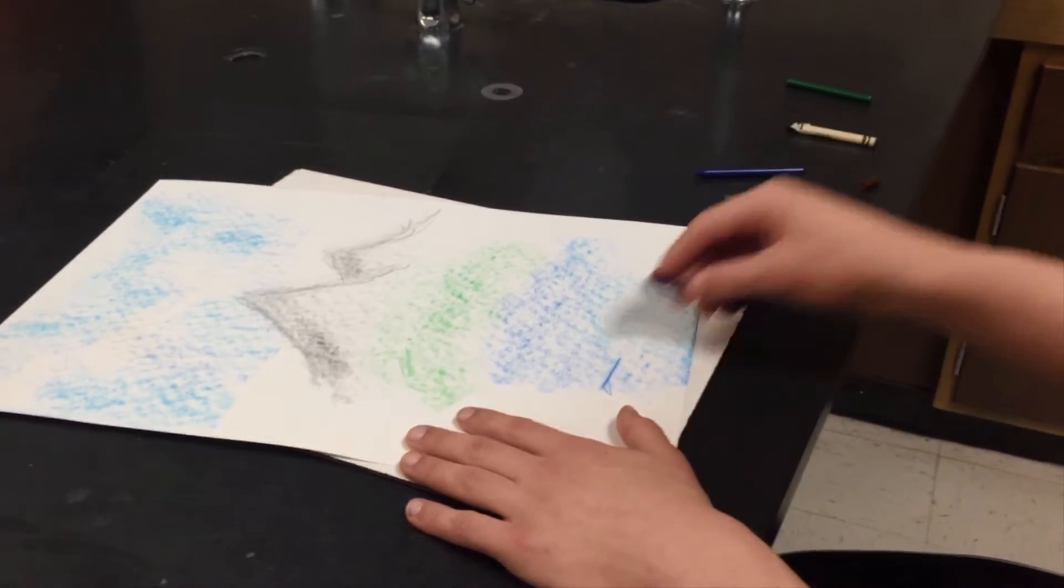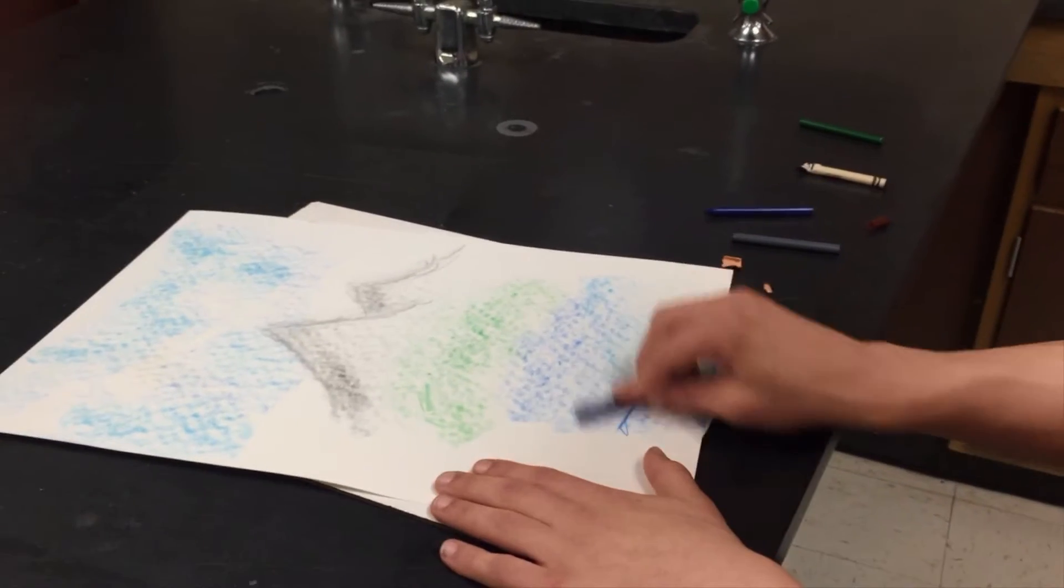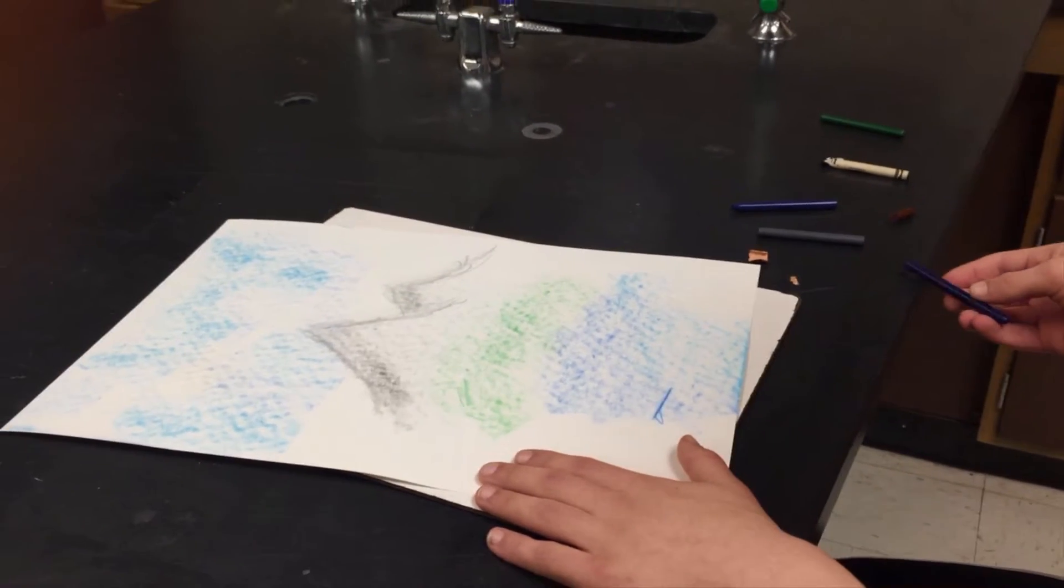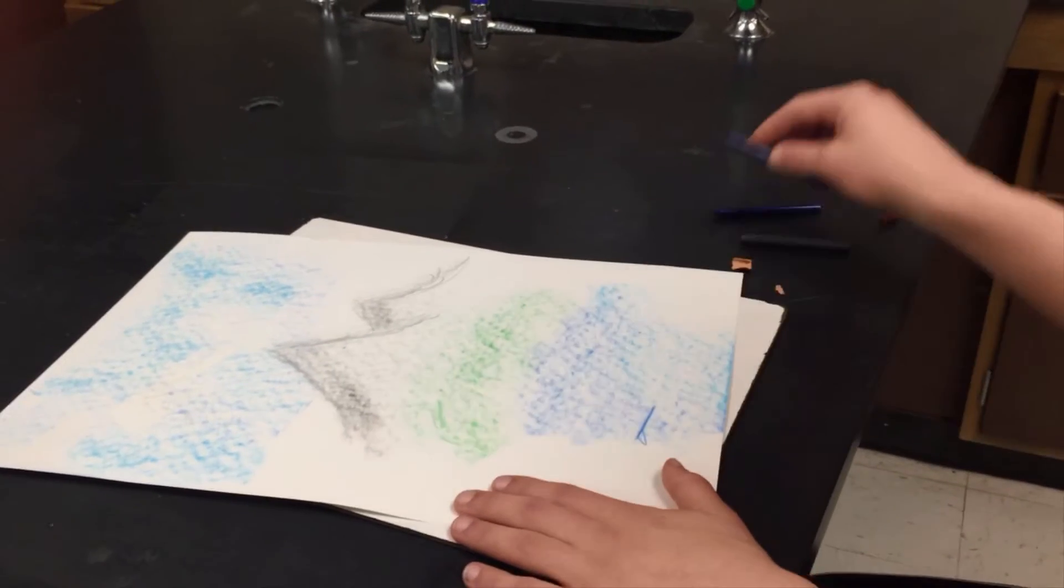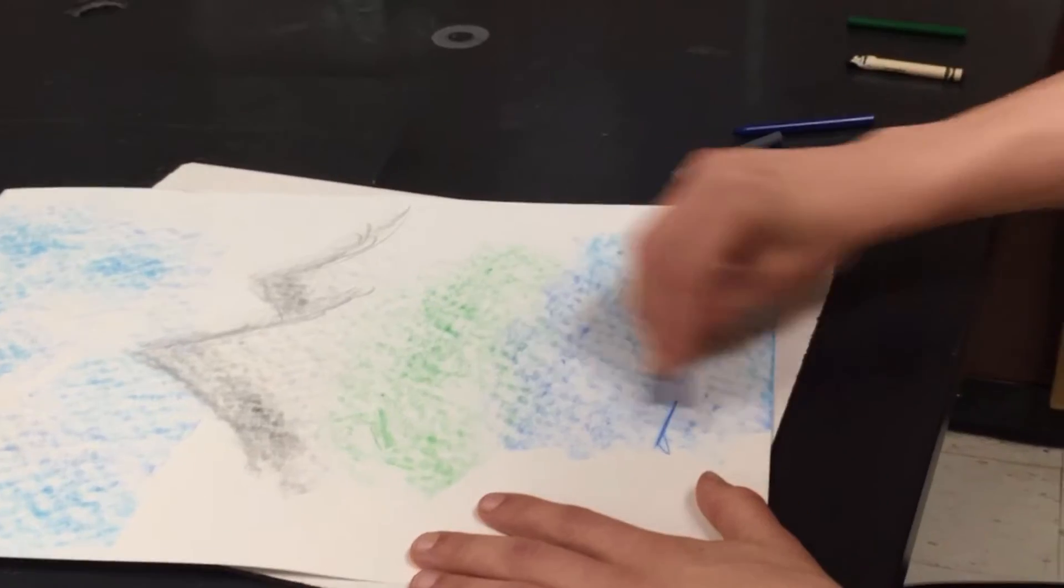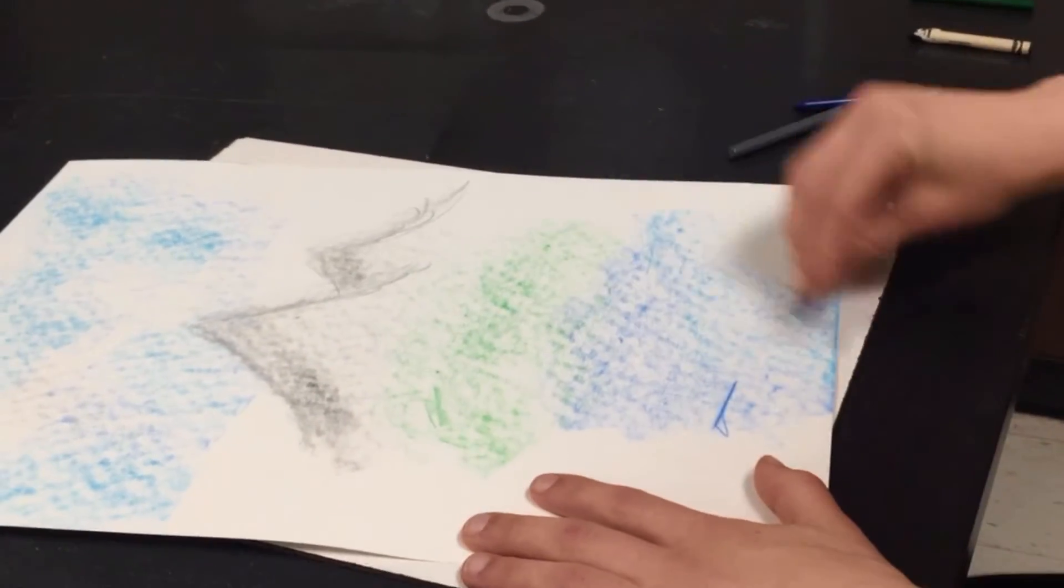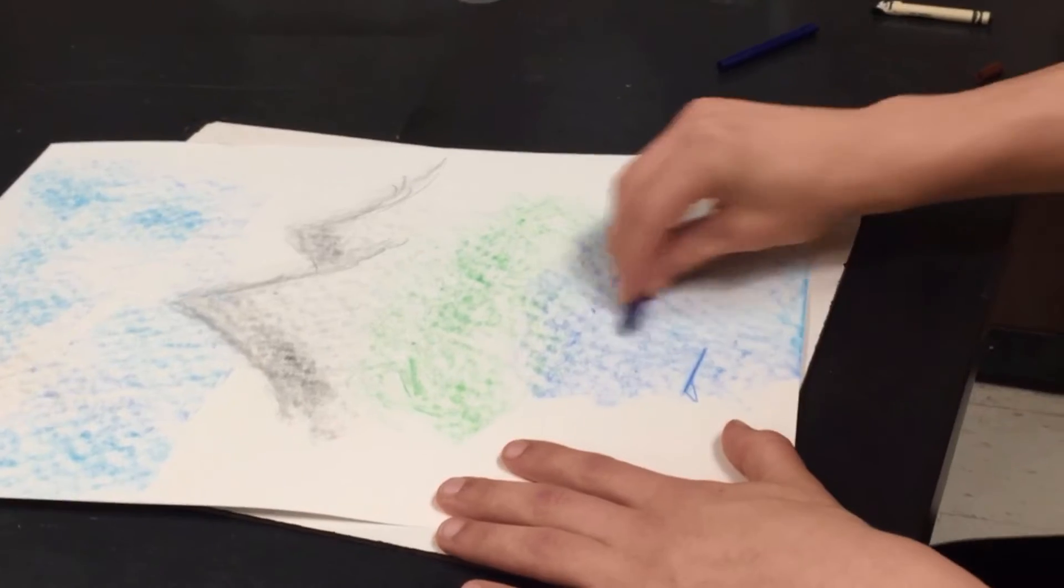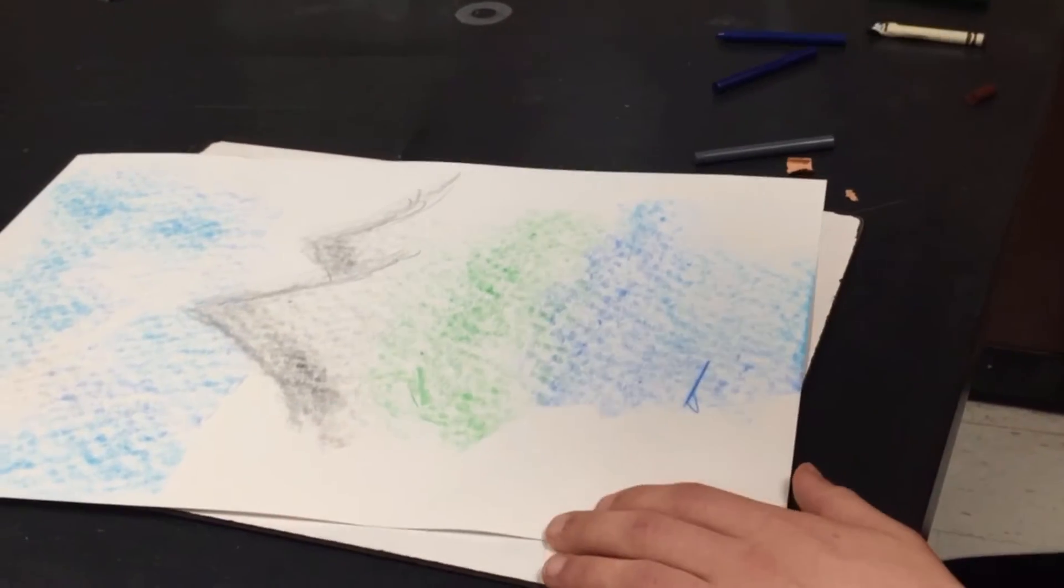Now, just very lightly, go all the way across and sort of bring it together. And that light area here, it'll remain in there. Okay. Now, very lightly go across. Very, very lightly. Just enough to blend it and give it the feeling of water.